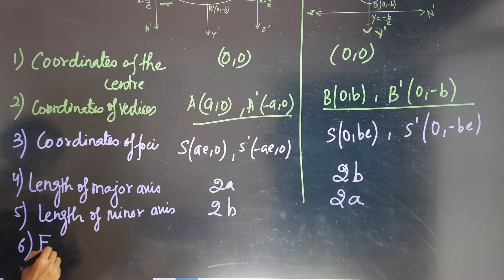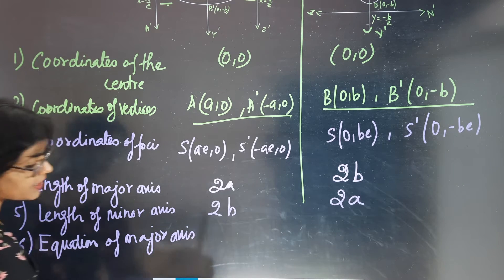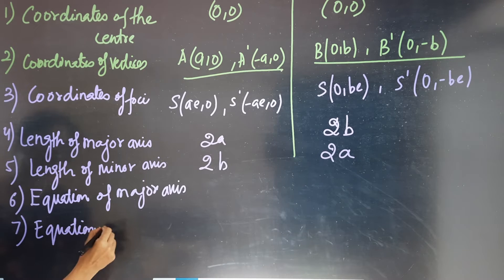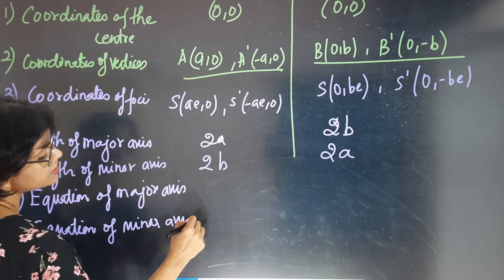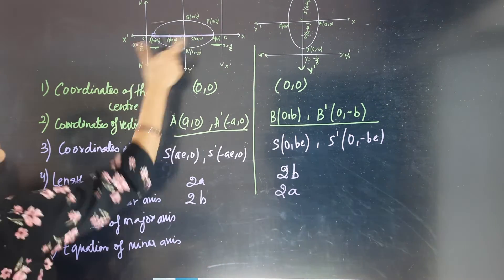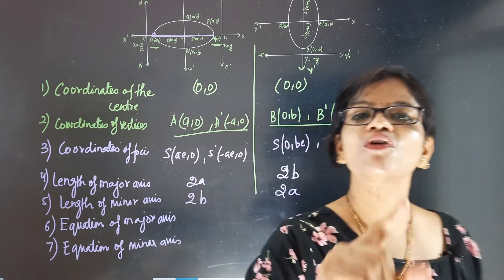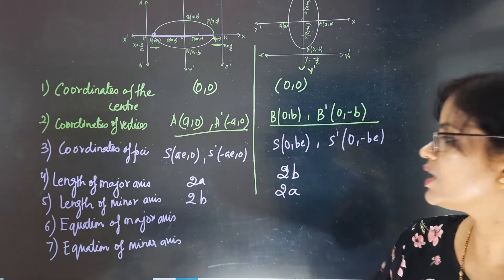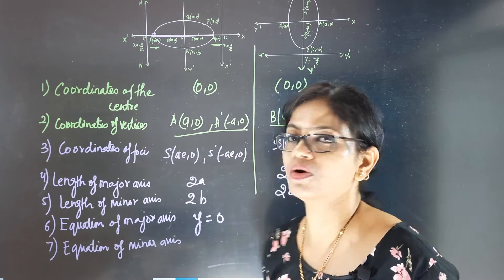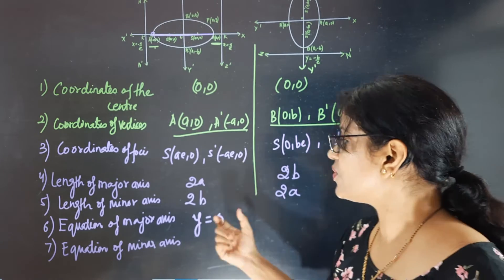Fifth: equation of major axis and equation of minor axis. For the ellipse resting on the x-axis, the major axis lies on the x-axis where y = 0, so the equation of major axis is y = 0. The minor axis is on the y-axis where x = 0, so the equation of minor axis is x = 0.